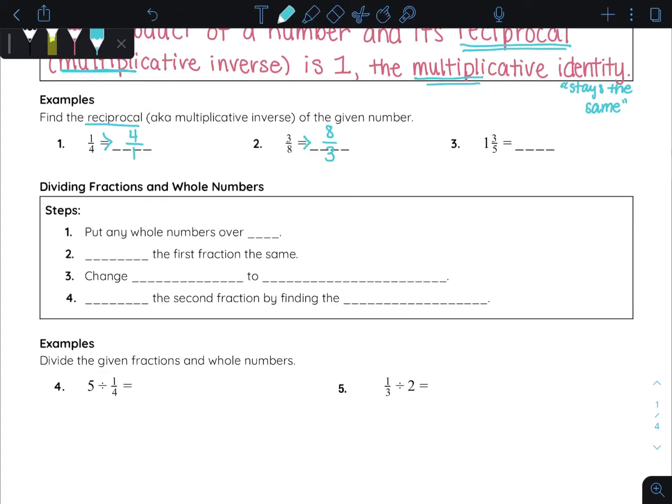Now this last one doesn't really have a clear top and bottom. Whenever you see a mixed number, remember you want to change it into a fraction. So five times the one, and then add the three. So five times one is five, plus three would be eight. Keep it over the five. Now we want the reciprocal of that. So flip it over, five-eighths. So those are our three reciprocals. Just flip it over.